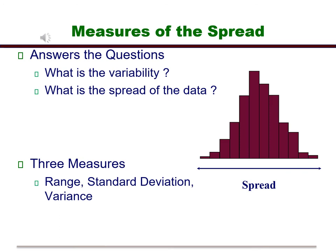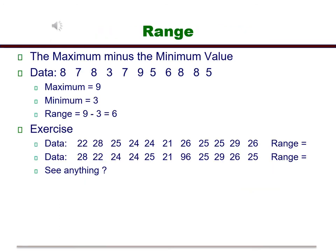Let's start with the range. The range is the maximum minus the minimum value. So if you have a data set, like the data set in the slide, you just order the data set, take a look at the lowest number and the highest number. In this case, the highest is 9, the lowest is 3. Subtract them from each other, and you will end up with a range of 6.